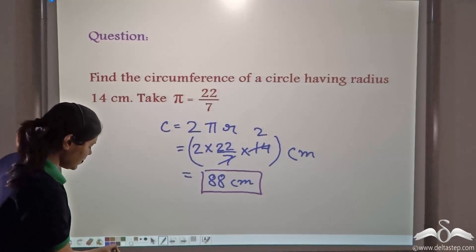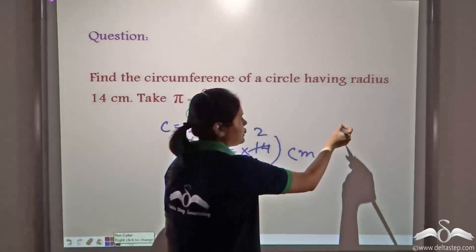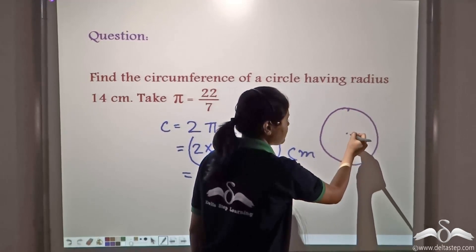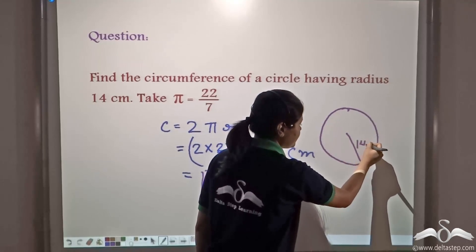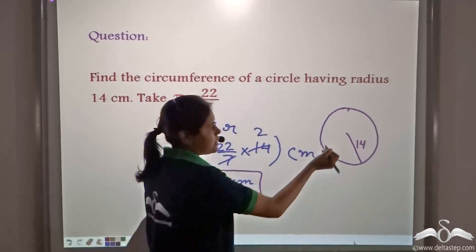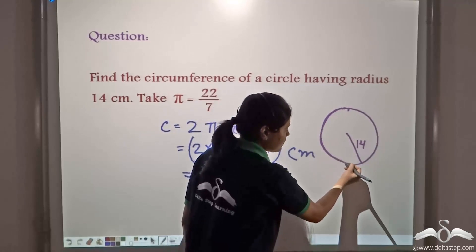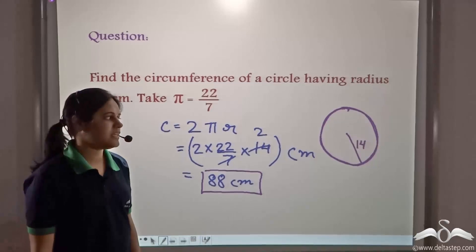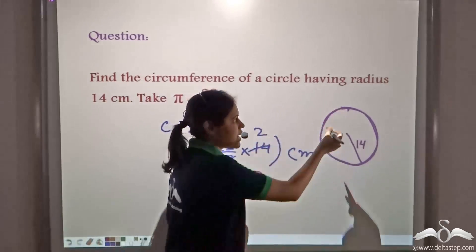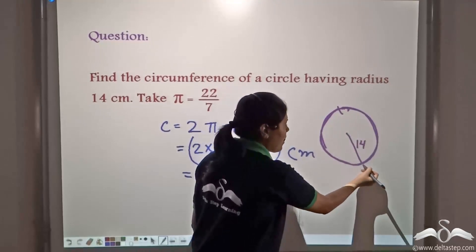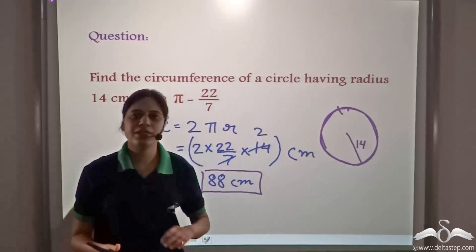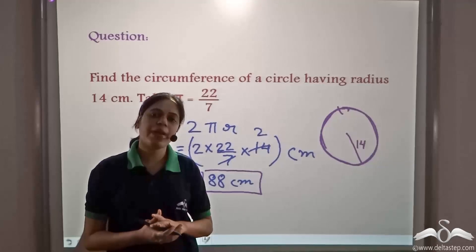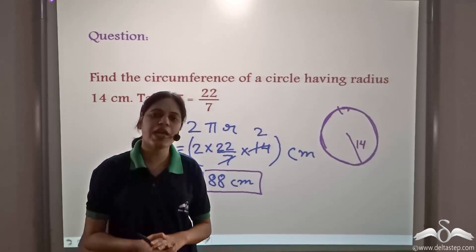To visualize what this means: if we have a circle with radius 14 centimeters, then the length around the circle — starting from one point and coming back to that same point — is 88 centimeters. This length is the perimeter or circumference of the circle.